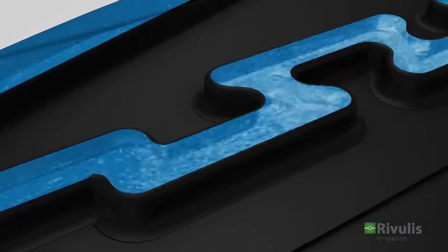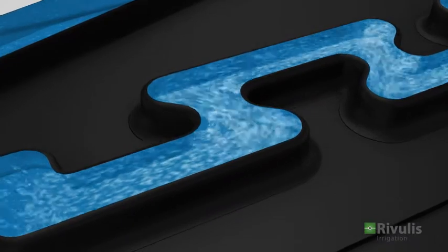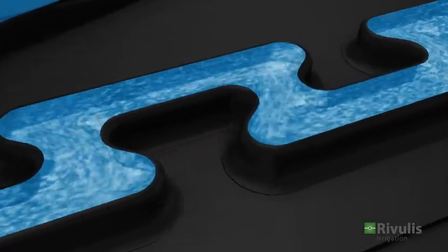The shape of the RODRIP creates a natural turbulence which keeps the dirt particles suspended and moving through every corner, twist and turn of the flow channel.